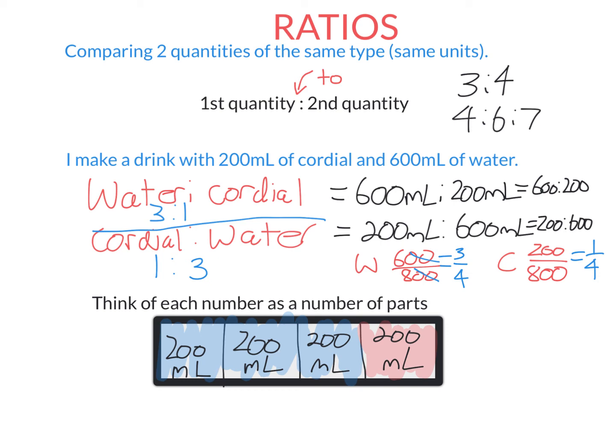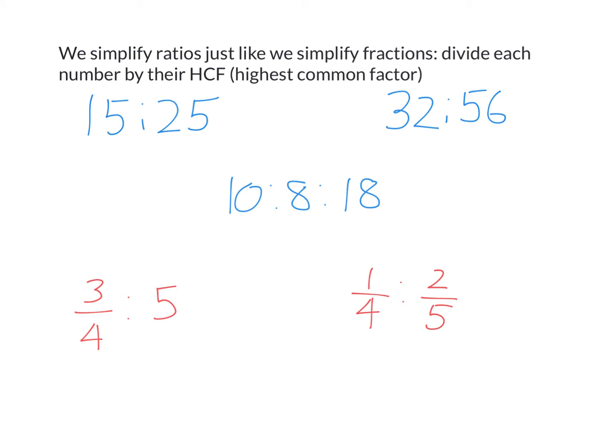Let's look at simplifying ratios some more. I said before that ratios are really just fractions in disguise. So we simplify ratios exactly the same way we simplify fractions. Remember to simplify a fraction, we just divide the top and bottom number by their highest common factor. And so we will do for ratios. We'll just take each number in the ratio and divide by the highest common factor. So the highest number that goes into 15 and 25 is 5. So 15 divided by 5 is 3, 25 divided by 5 is 5.